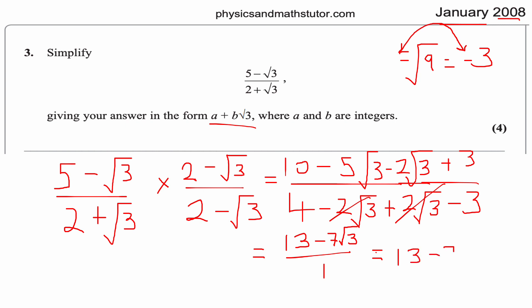So the answer is 13 − 7√3. To rationalize a denominator in the form a + √b, multiply by the conjugate (changing the + to −). This creates a difference of two squares on the denominator, giving a whole number and eliminating the surd from the denominator — hence the name 'rationalizing the denominator'.